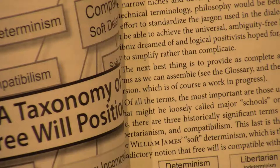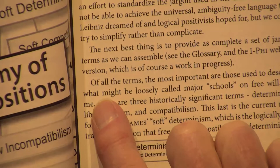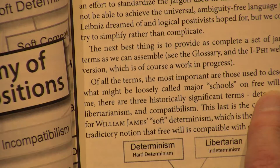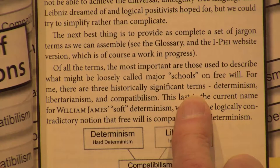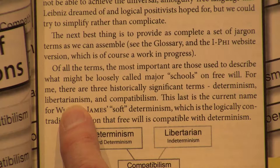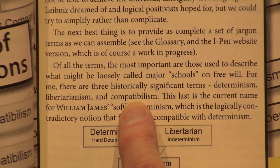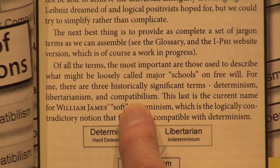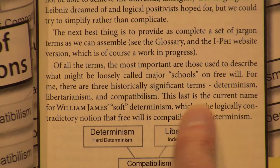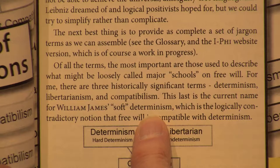Of all the terms, the most important are those used to describe the major schools on free will. For me, there are three historically very significant terms: determinism, of course; libertarianism, which says we are not determined; and then this strange idea of compatibilism — the argument that free will is compatible with determinism. This last name is what William James called soft determinism, which I believe is logically contradictory — sort of an oxymoron to say that free will is compatible with determinism.